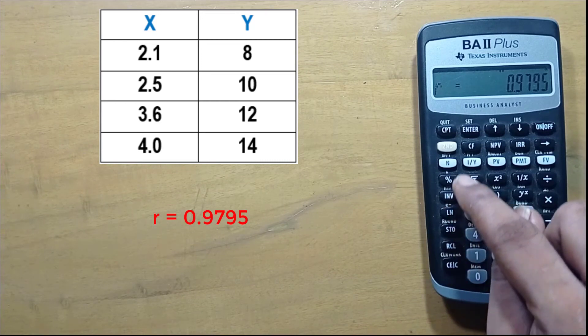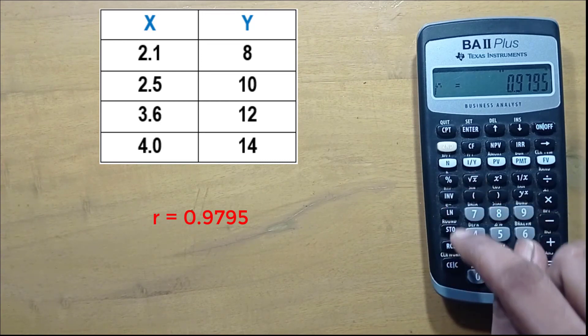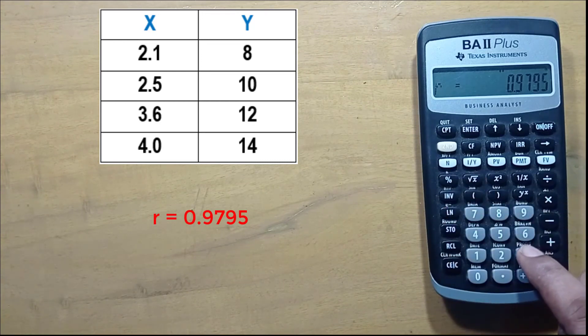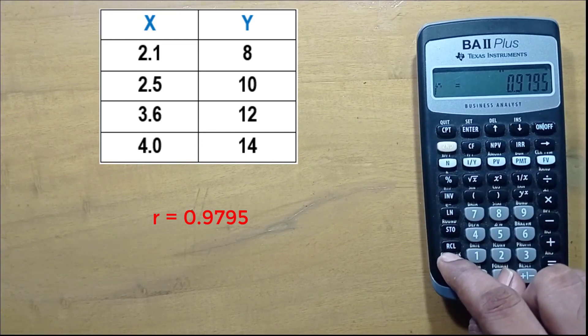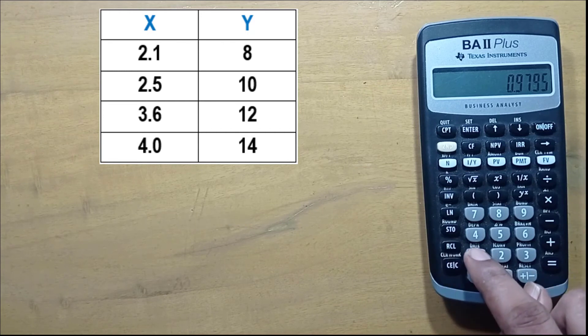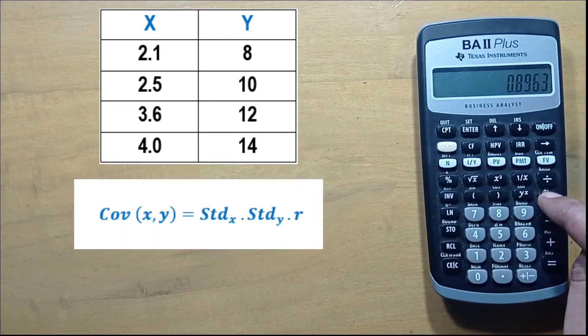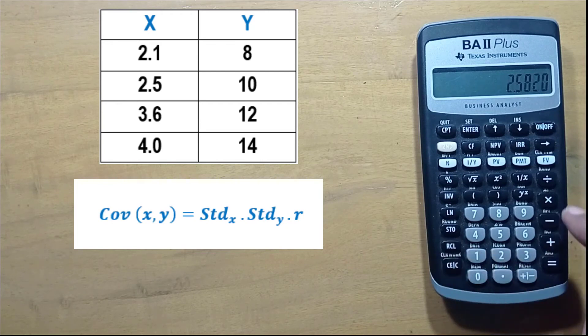Clear the screen. Recall 1, multiply by recall 2, multiply by recall 3. Now press the equal sign to get the result.